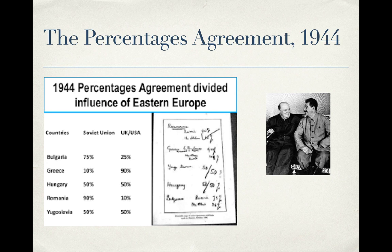This is not in your packet for your guided notes, but I wanted to include the percentages agreement because it's something I found kind of silly regarding Churchill and Stalin. This is something they actually put down on a napkin. They had met in Moscow in October 1944, and they did this without Roosevelt being present. These two sat down and wrote this on a napkin discussing how they were going to split up different regions, looking at their spheres of influence.